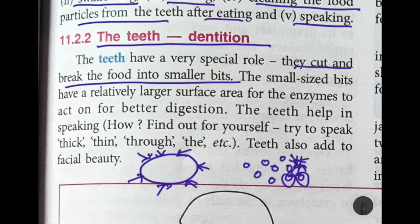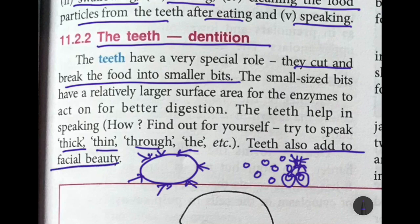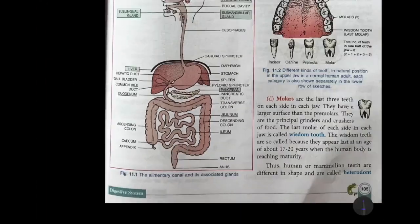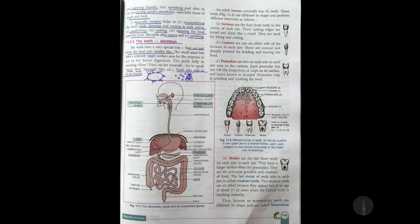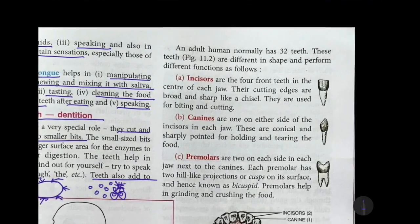The teeth also help in speaking — try to say words like 'thin' or 'the' and you will notice how your tongue presses against your teeth to produce those sounds. So teeth play an important role in pronouncing words that contain 'th' and 't' sounds. Teeth of course also add to your facial beauty — a beautiful set of teeth makes you look very pretty when you smile.